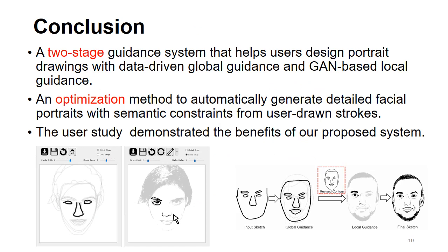In conclusion, we propose a two-stage guidance system that helps users design portrait drawings with data-driven global guidance and GAN-based local guidance. We propose an optimization method to automatically convert a contour sketch to a mask, aimed at generating a detailed facial portrait with semantic constraints from freehand user-drawn sketches. Three user studies demonstrate the benefits of our proposed system. Thank you for listening.